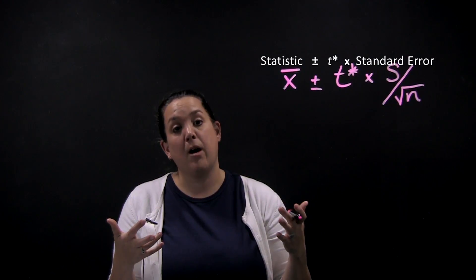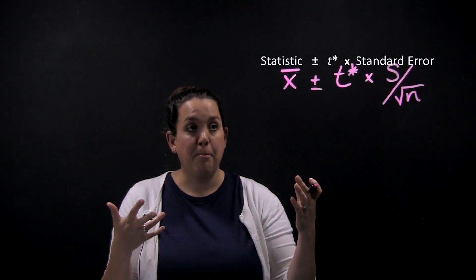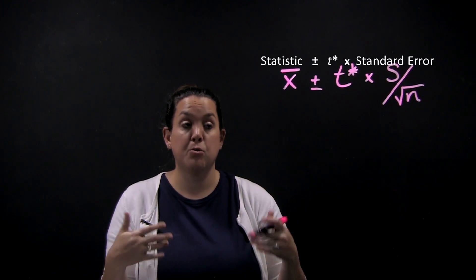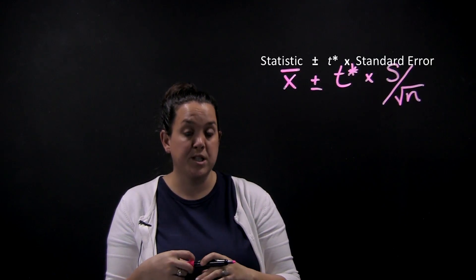So after we calculate this confidence interval, we're hoping that it contains mu. So we're not positive that we'll be in there because it's going to be a form of inference. So we're going to use this sample data to create an interval that we hope mu is contained within.